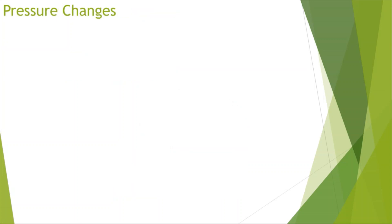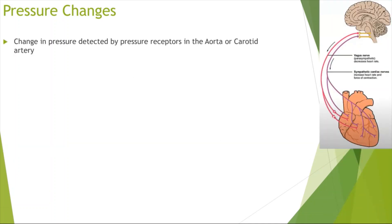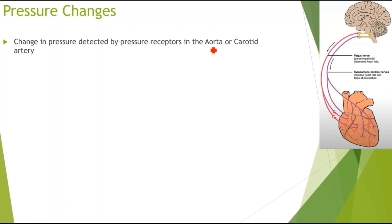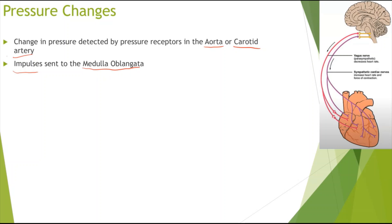So now looking at how pressure changes affect the heart rate. A change in pressure — which could be due to stress or other factors — would be detected by the pressure receptors, which are located in the aorta as well as the carotid artery.